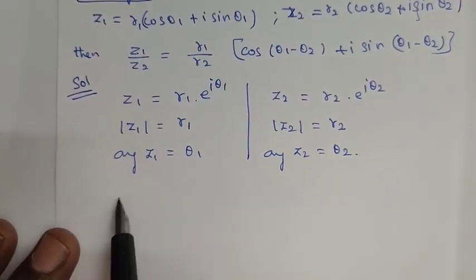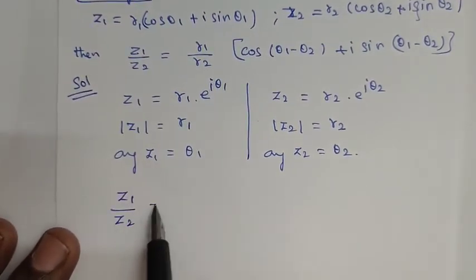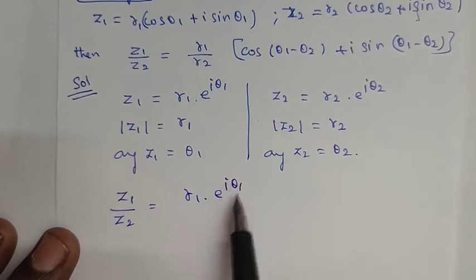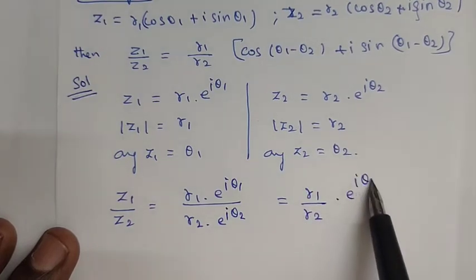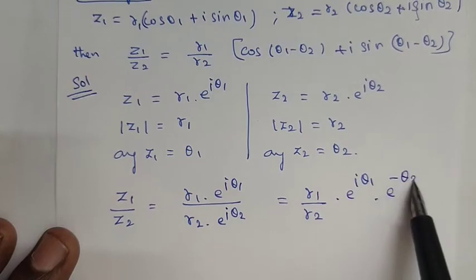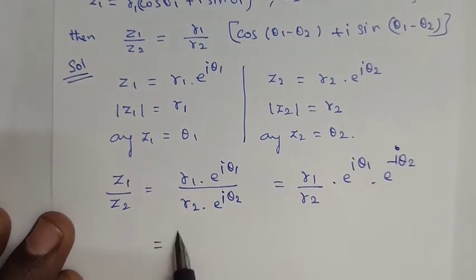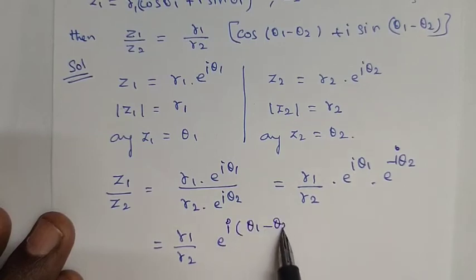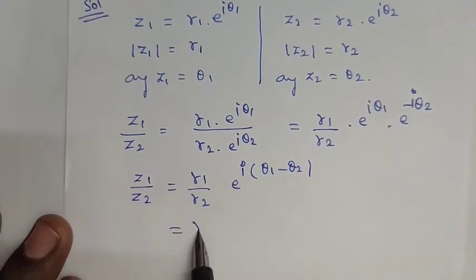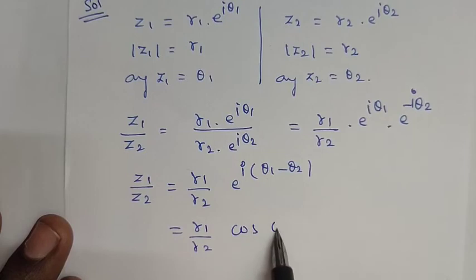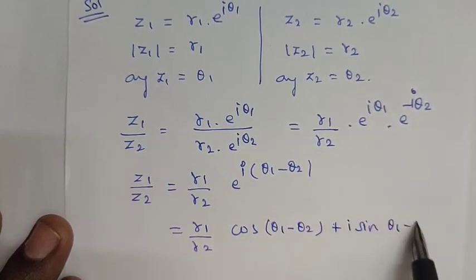For z1 by z2: z1 divided by z2 equals r1 into e to the power of i θ1, divided by r2 into e to the power of i θ2. This gives r1 by r2 into e to the power of i(θ1 minus θ2), which equals r1 by r2 into cos(θ1 minus θ2) plus i sin(θ1 minus θ2).